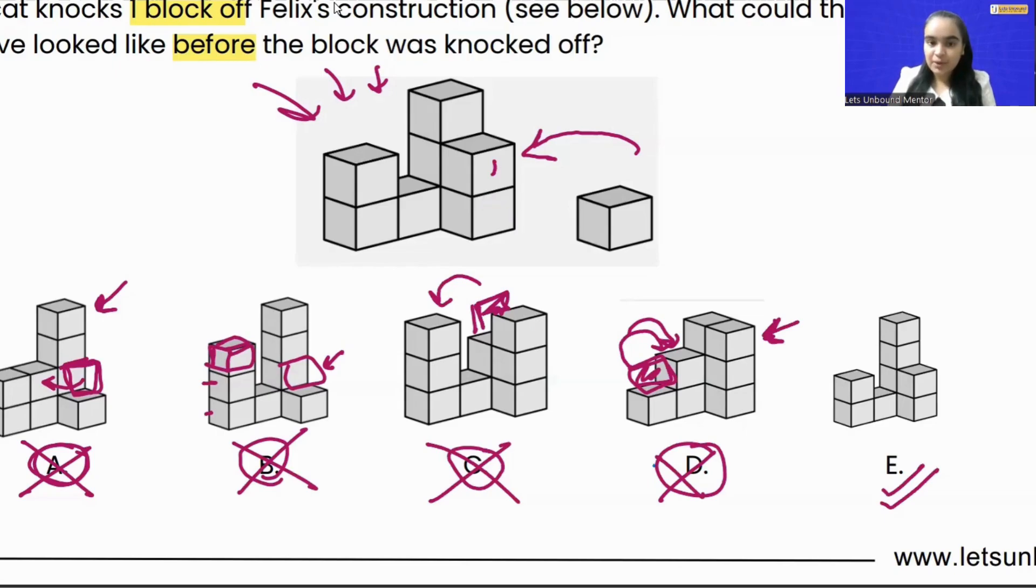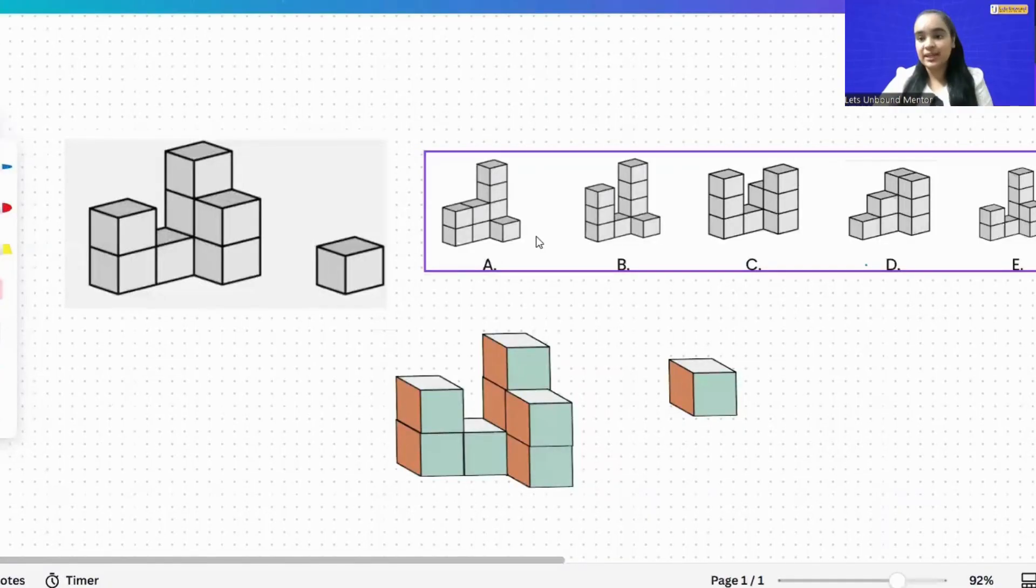Now in option E, if we see, they have just kept the block over here. All the other positions, everything is the same as what they provided us in the construction. Just this block is added. So that means option E is correct. But let me show you how option E has been created.